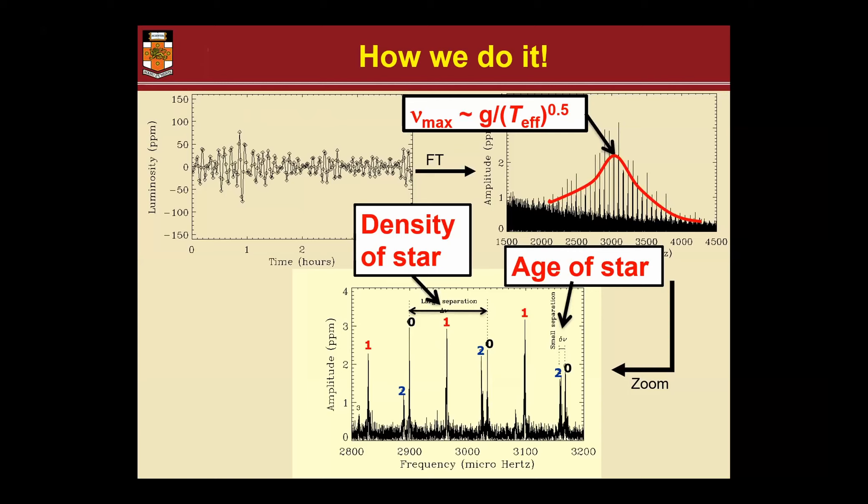There are a number of things in this Fourier transform that can give us important information. One of them is the density of the star, which is the separation when the pattern repeats, or the age of the star, which is the distance between these two guys because they sense the core differently as hydrogen turns into helium. Then there's this smooth curve - if you look where is the peak of all this acoustic power, it's roughly there at nu max, and it goes very closely to the surface gravity and temperature.